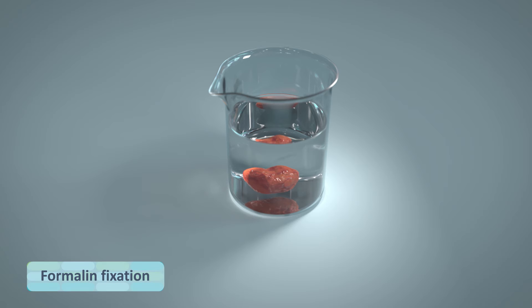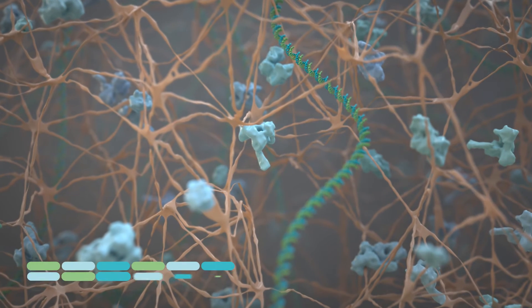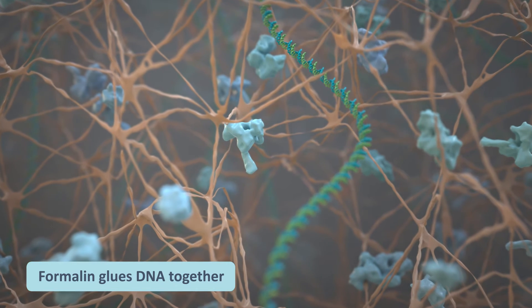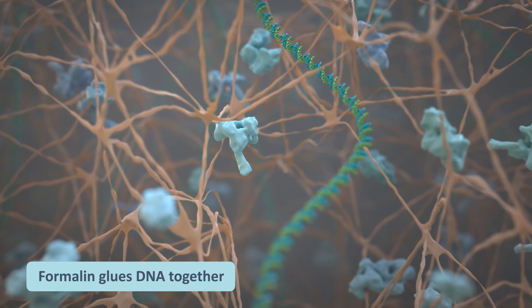One way to preserve tissue for these tests is to immerse it in a liquid called formalin, which is diluted formaldehyde. Formalin fixes tissue by gluing together all the different proteins and DNA inside a cell, also called chemical cross-linking.